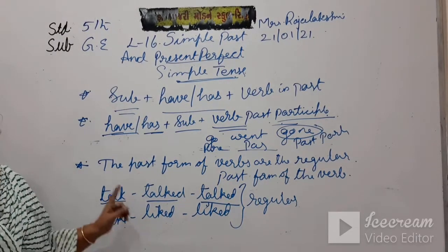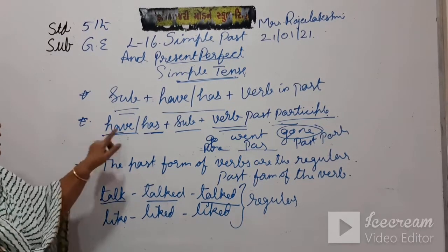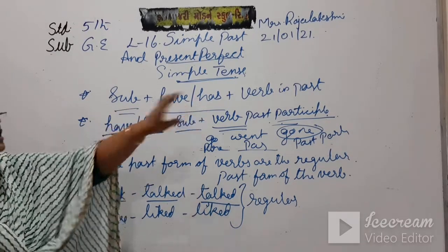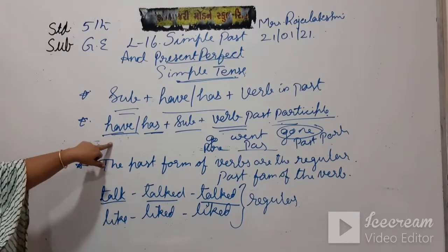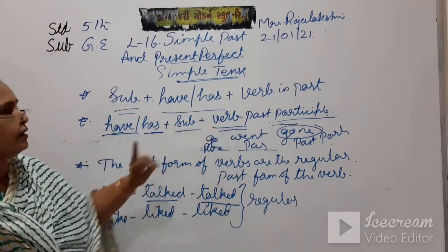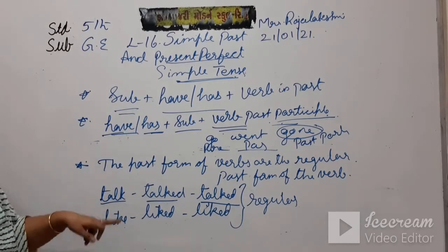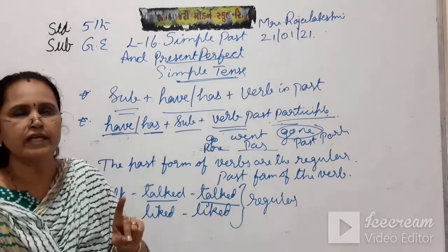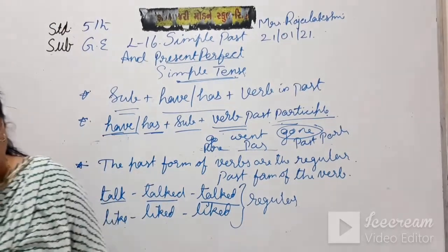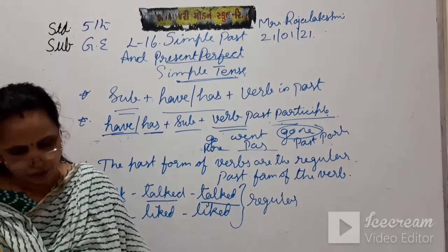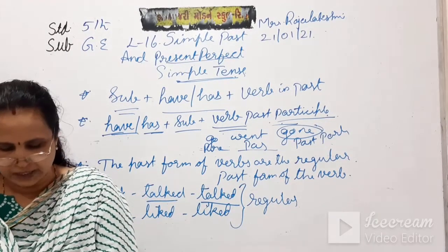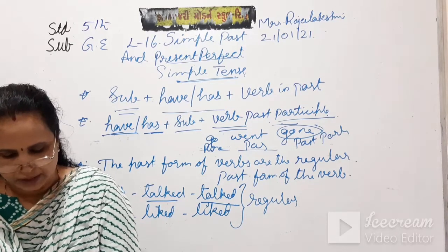These are the rules for using Present Perfect. For a sentence: subject + have/has + past participle. For a question: have/has + subject + past participle. For regular verbs, past participle is the same as the past tense form. Look at the chart: base form, past form, and past participle form — for regular verbs they are the same.